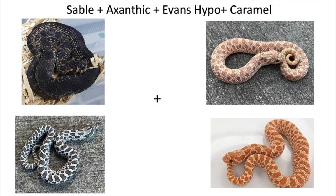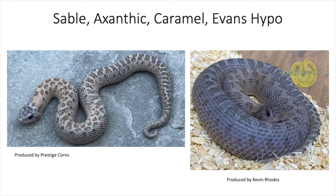Lastly, we could potentially have a four-recessive gene hognose snake. Combining sable, xanthic, Evans hypo, and caramel may give us this result. The one on the left was produced by Prestige Corns — I did a separate video on this combination with more pictures, link up top. The other picture on the right was produced by Kevin Rhodes and could also potentially be all four of these genes. Neither breeder is 100% sure — they'll have to prove them out — but that is it for this video.